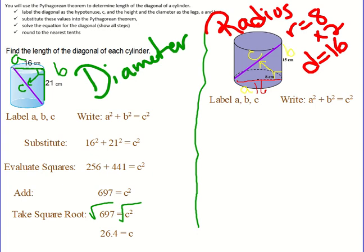From here I'm going to substitute those numbers into the Pythagorean Theorem formula. So I have 16 squared plus 15 squared equals C squared. I'm going to evaluate 16 squared, 16 times 16, and 15 squared, 15 times 15. I get 256 plus 225 equals C squared.